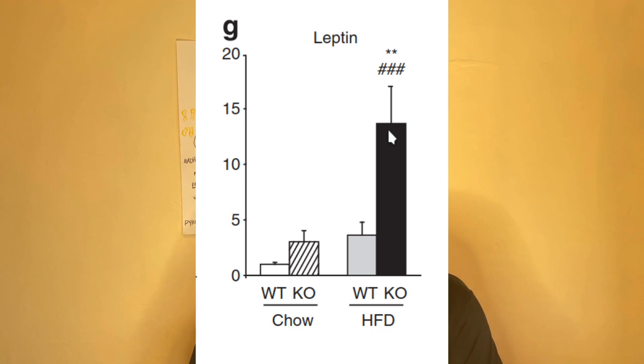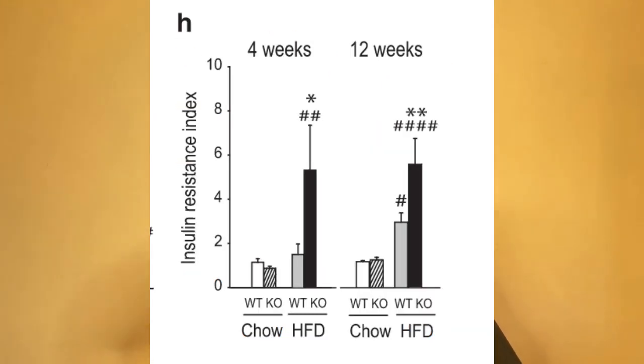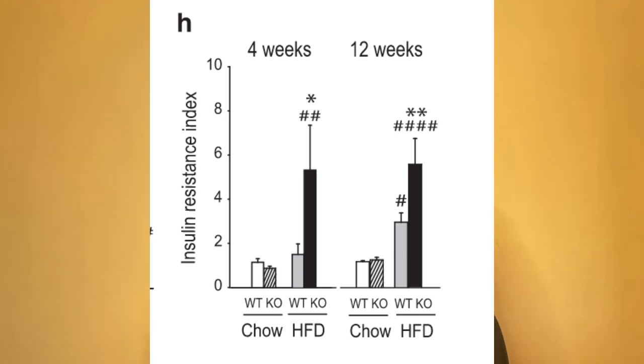Interestingly, these mice also have very high levels of leptin and very high levels of insulin, and they are very insulin resistant. So leptin is a hormone that's made by your fat cells. It signals satiety, it makes you feel full.